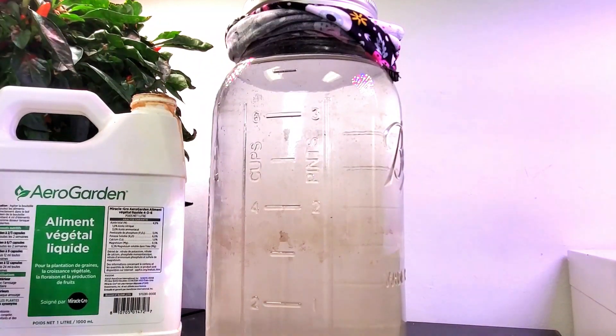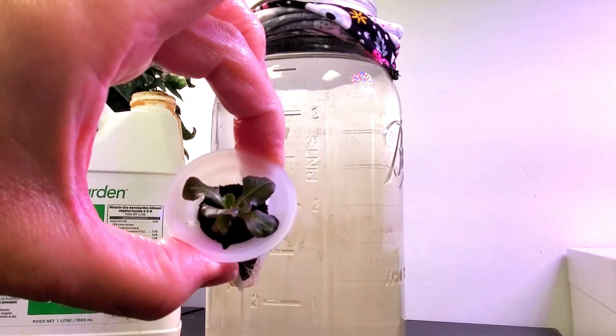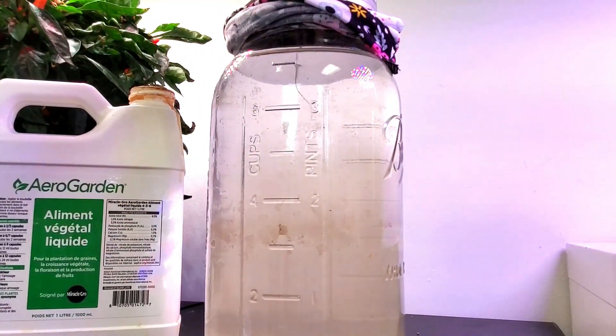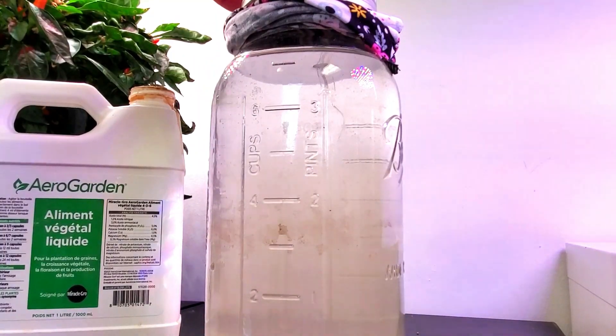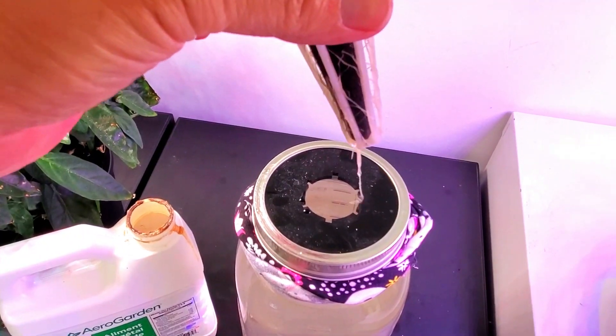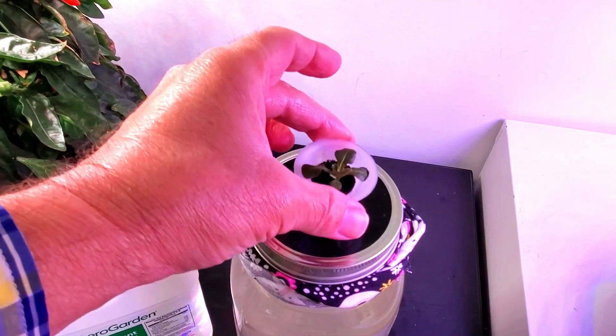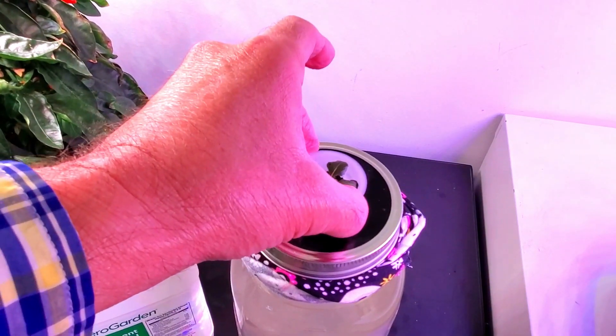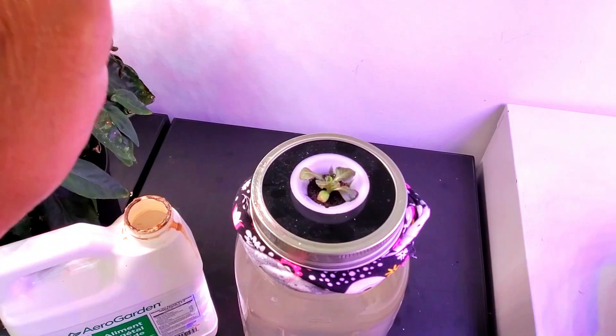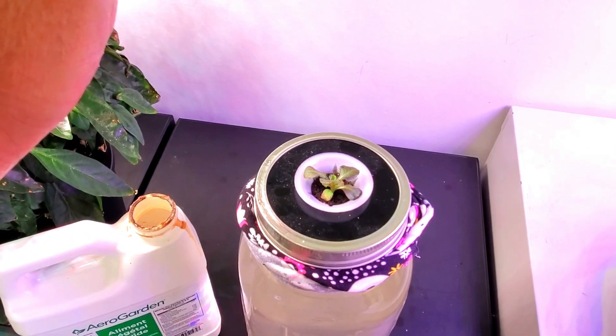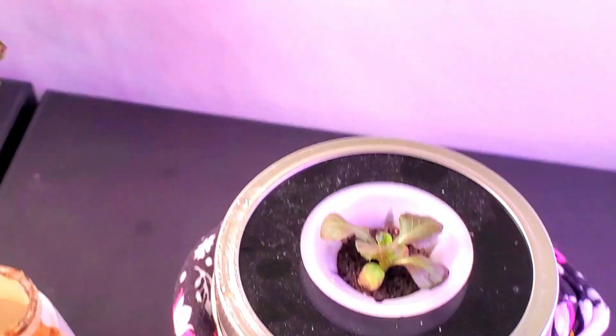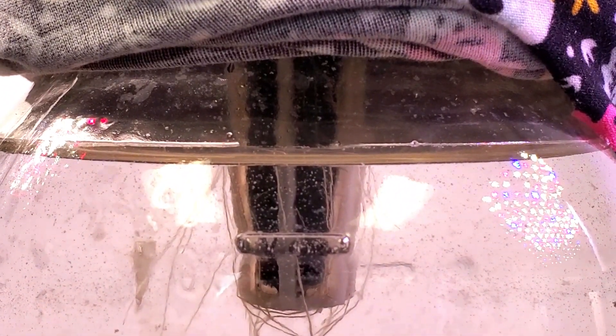I can set this AeroGarden basket right into the center. Let me show you from the top. I'm going to drop it down in and turn it until the ribs on the basket fit right into the top of the jar. Inside the jar, you can see the water level with the nutrients and how I've left a little bit of air, with the rest of the roots underwater.